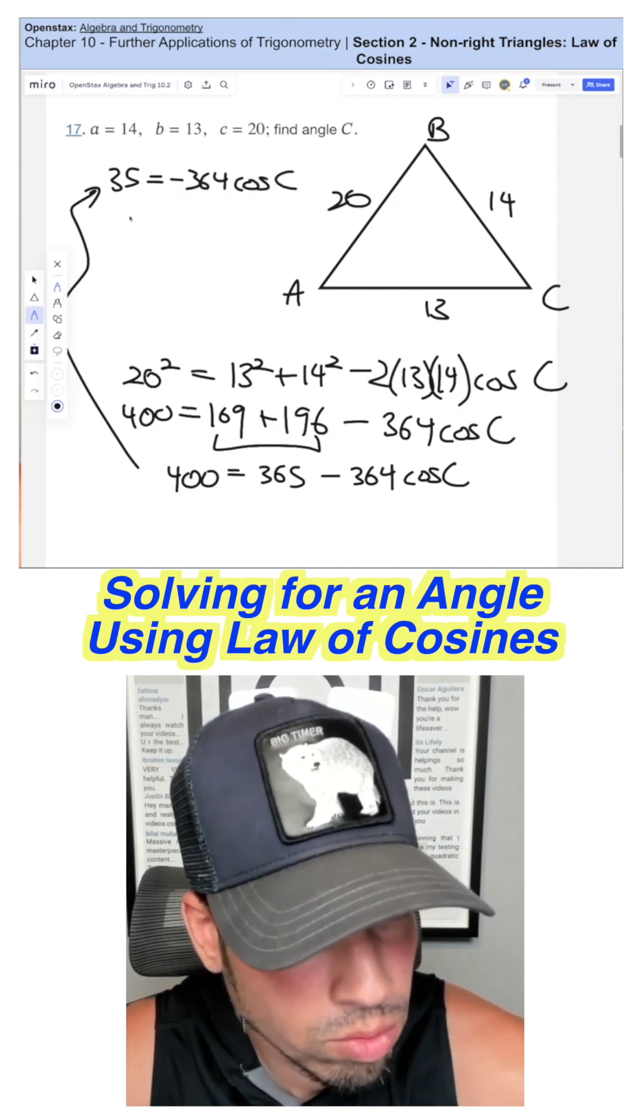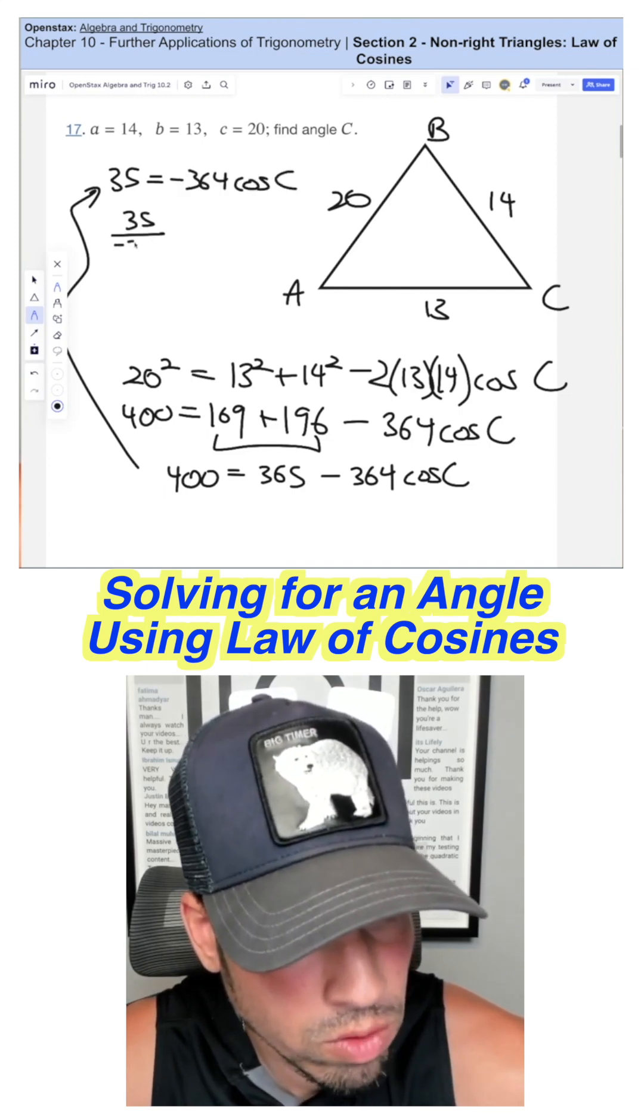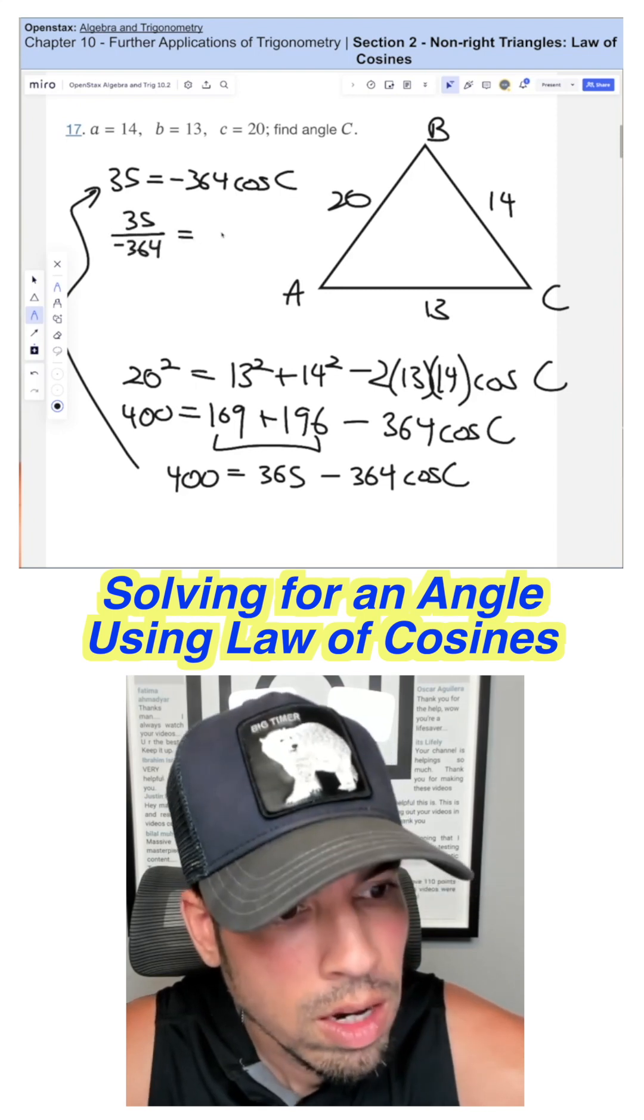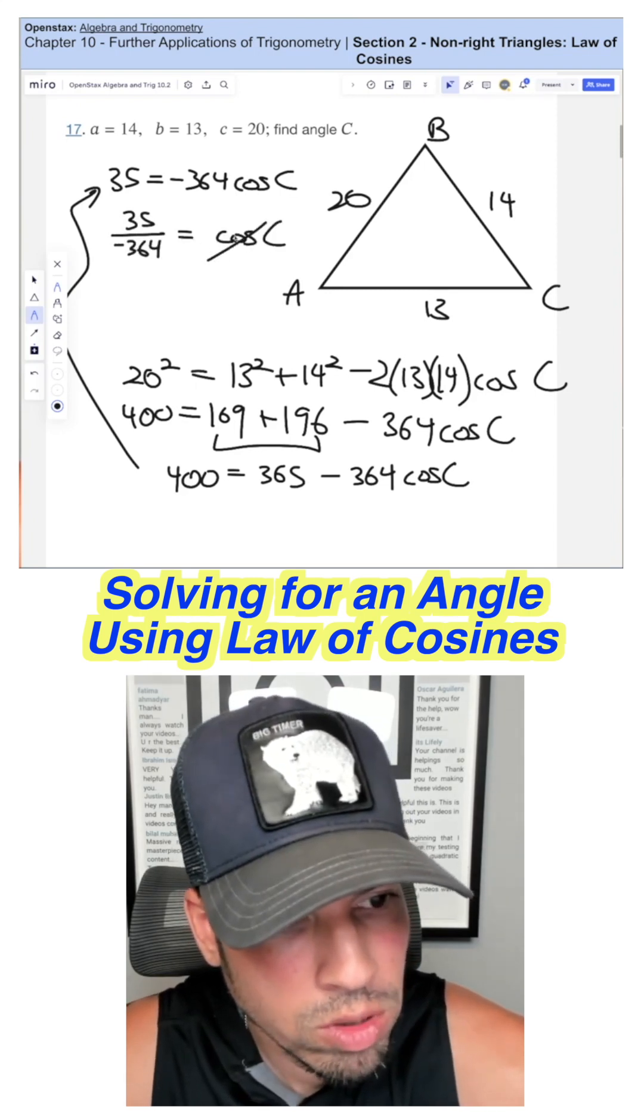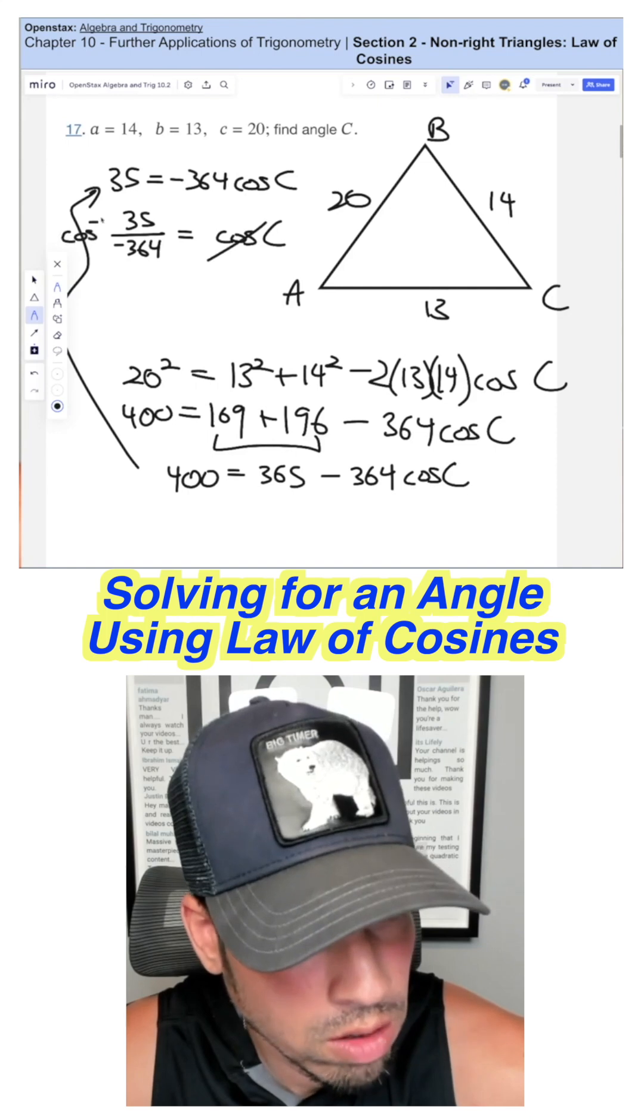Then we're going to divide by negative 364. So we get 35 over negative 364. And then last step, we have to get rid of the cosine. We have to take arc cosine of both sides.